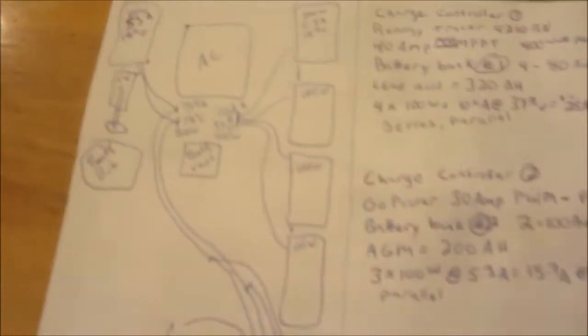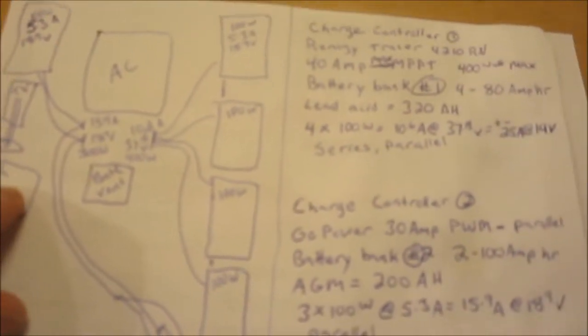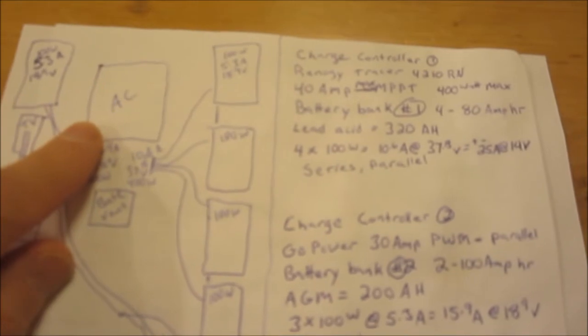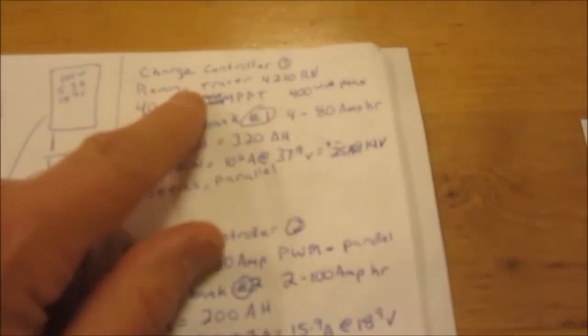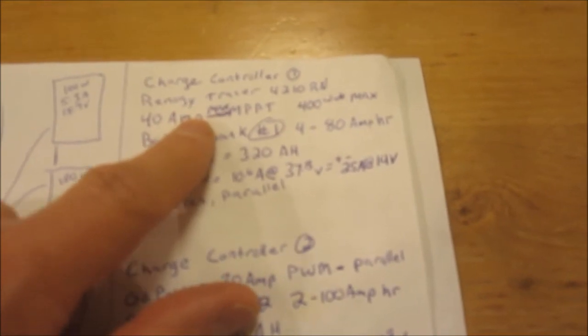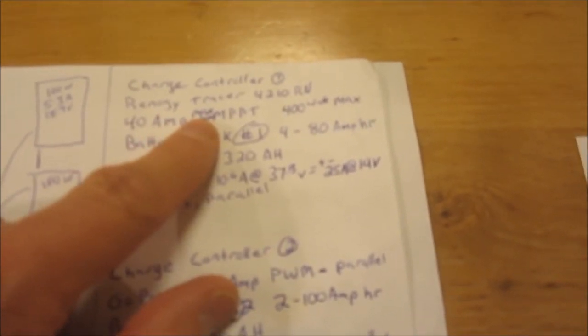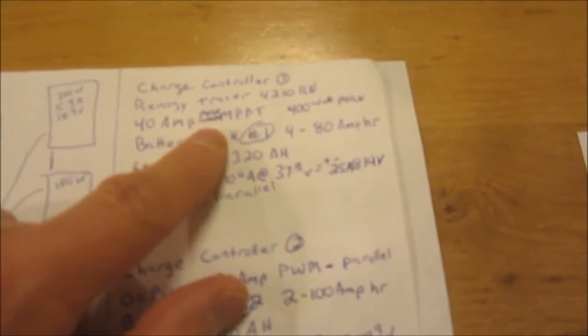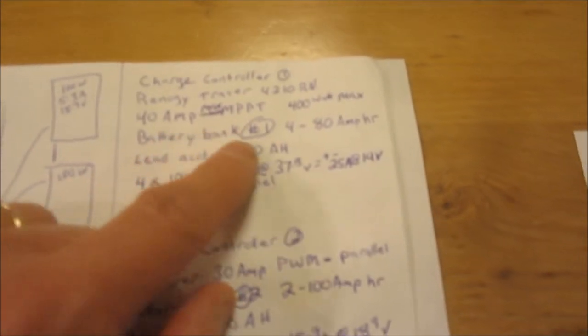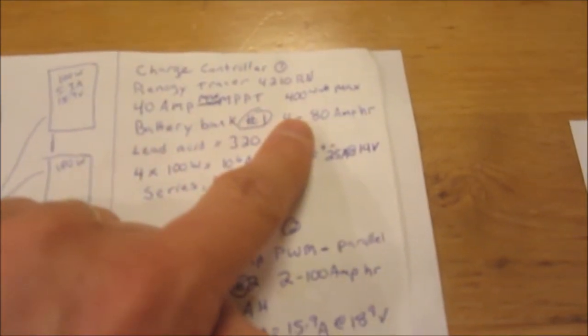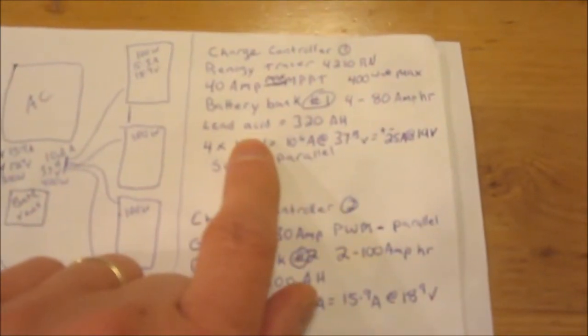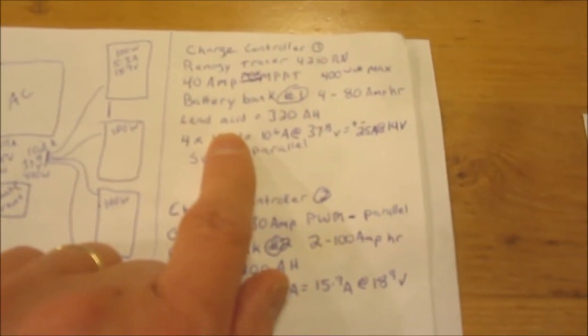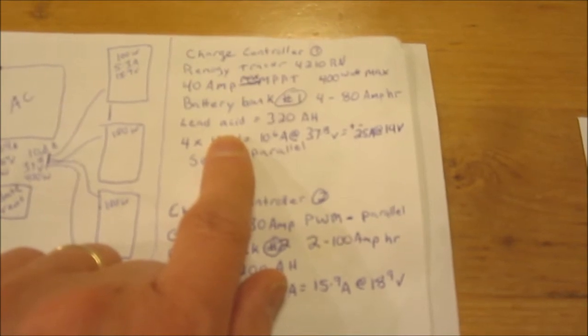The system I'm running right now, I have two charge controllers and two systems. The first charge controller is a Renogy Tracer 4210 RN. It's 40 amp, its limits are 400 watt input. My battery bank is 480 amp hour lead-acid batteries for a total of 320 amp hours.